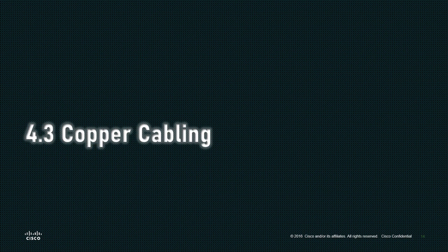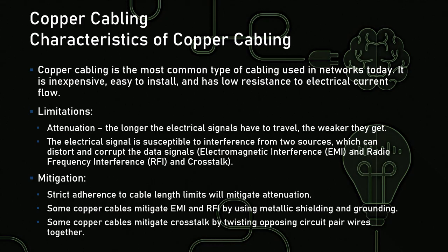Now let's take a peek at copper cabling. Copper cabling is the most common type of cabling used in networks today. It's very inexpensive, easy to install, and has extremely low resistance to electrical current flow — near somewhere between zero and five ohms. The zero to five variation depends on the purity of the copper and the thickness of the conduit. There are some limitations though. Attenuation: the longer electrical signals have to travel on a single piece of conduit, the weaker they get. It's kind of like throwing a baseball — you put a lot of force into it at the beginning, but momentum diminishes over time. Electrical impulses are no different — the longer that signal goes on, the weaker it's going to get.